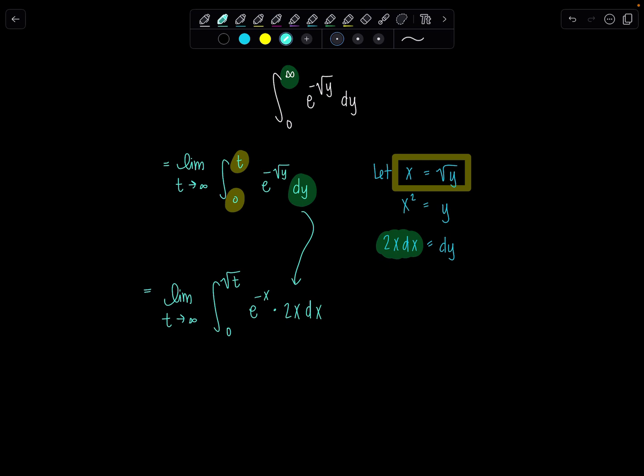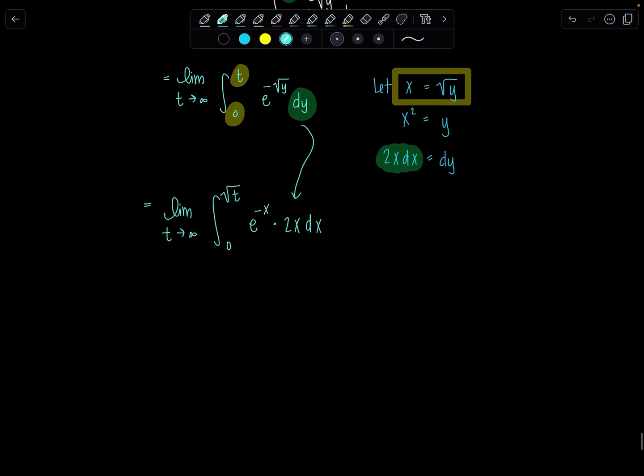Well, hopefully now it's more evident that we need to use integration by parts. We have a polynomial 2x times an exponential function. So let's go ahead and set it up. U is going to be 2x and then dv will be e to the negative x dx. Take the derivative, so du would be 2 dx, and then anti-differentiate, v is negative e to the negative x. Beautiful.